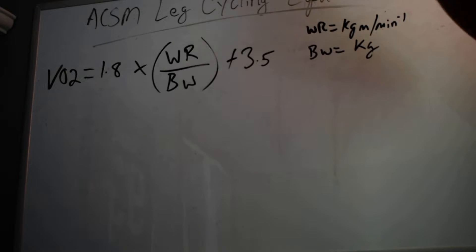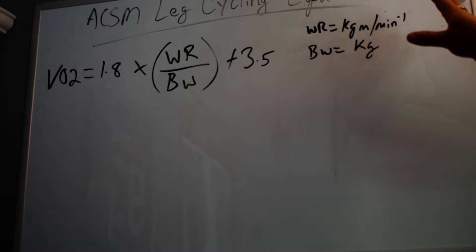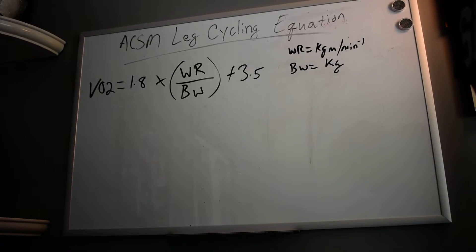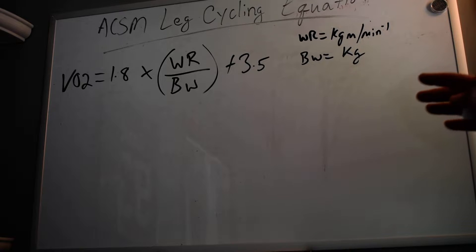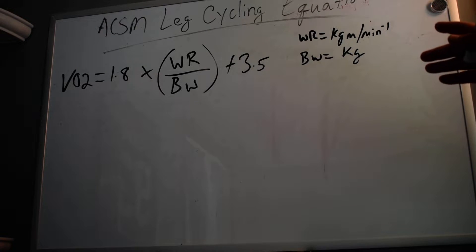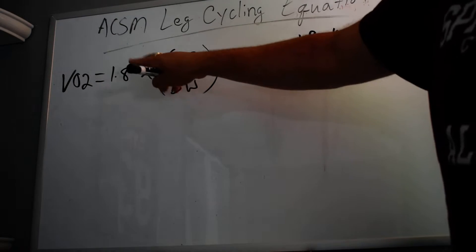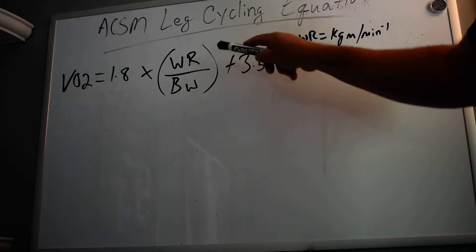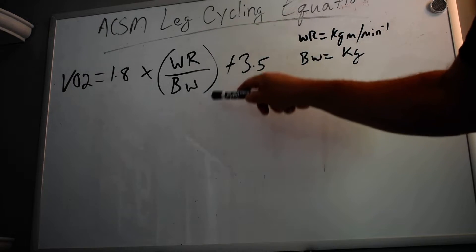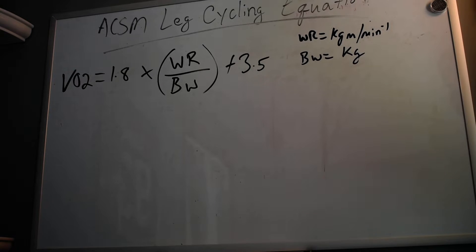You can see at the top here, titled 'The ACSM Leg Cycling Equation.' I have the base equation written out: VO2 equals 1.8 — that's a constant number that's not going to change — multiplied by the work rate divided by the body weight. This piece in parentheses should be done first: divide the work rate by the body weight, then multiply that result by 1.8.